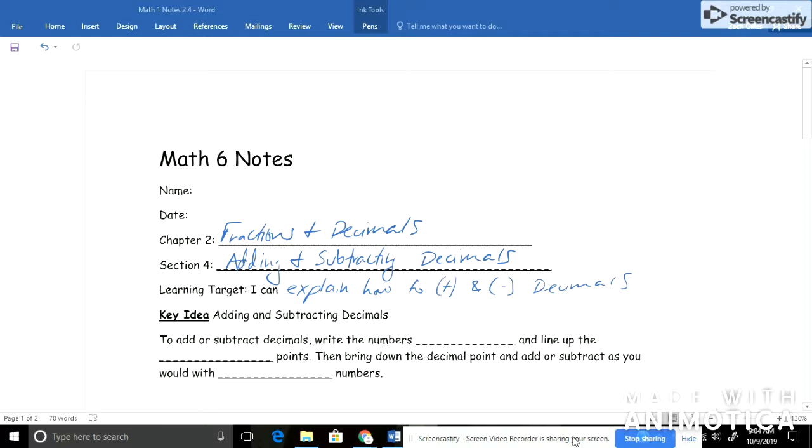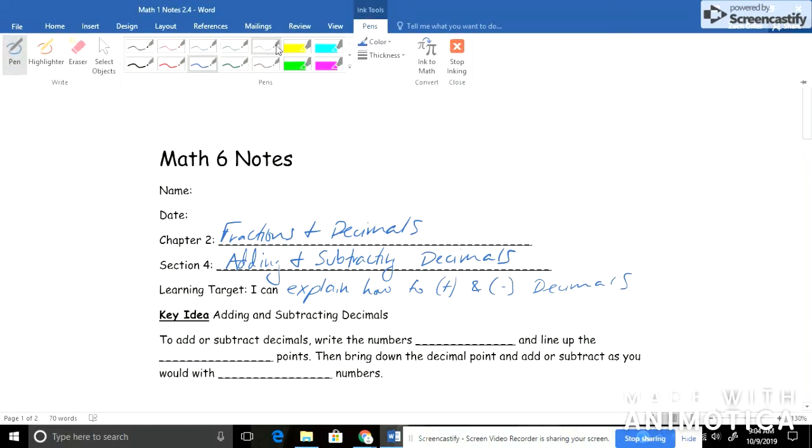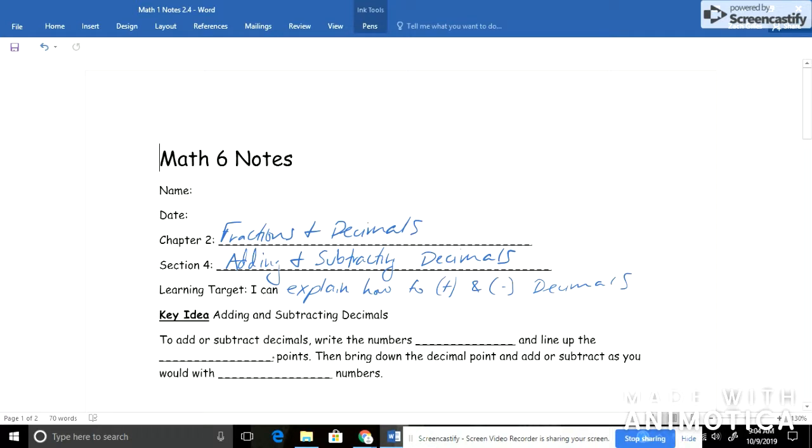Our learning target is I can explain how to add and subtract decimals. Key idea for today: to add and subtract decimals, write the numbers vertically and line up the decimal points. Then bring down the decimal point and add or subtract as you would with whole numbers.